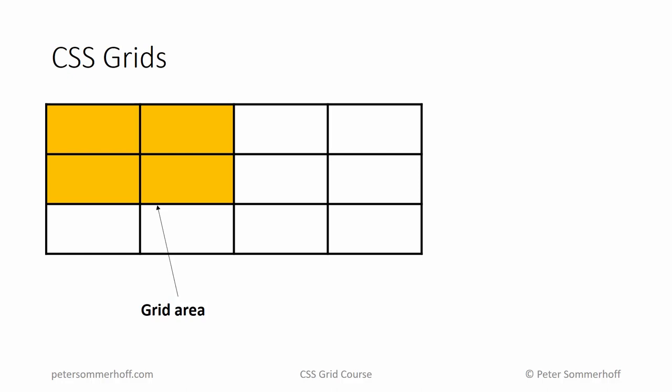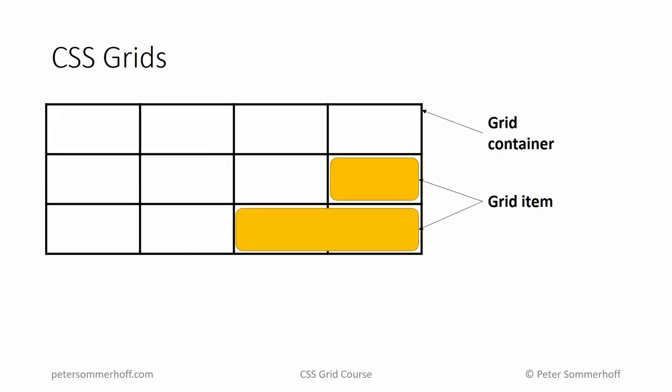Now lastly, we're going to talk about a grid container and grid items. The grid container is just going to be the whole grid that contains all the grid cells. A grid item can be any element that you place inside the grid. For instance, here we have one grid item that spans just one cell. Similarly, you can also have grid items spanning multiple rows or columns — like here, spanning two columns. So it's going to be a very flexible tool to lay out your elements on the grid in whatever way you like.